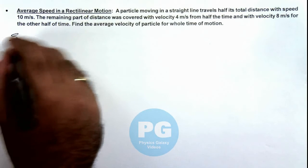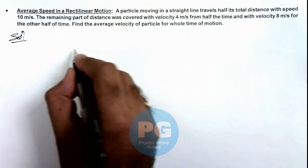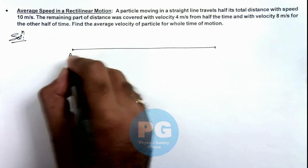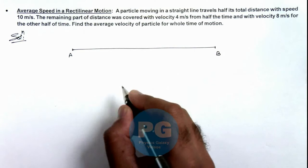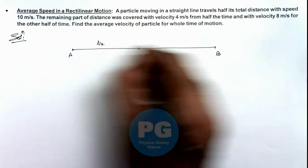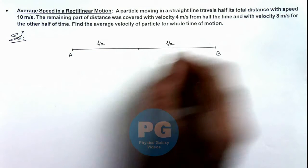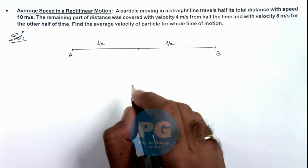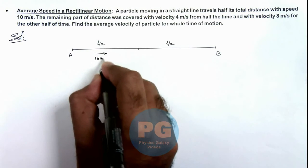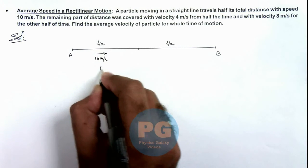In this situation, if we describe the motion on a straight line, say the particle moves from point A to B. Then, if the total distance is L, we divide the distance in two halves, L by 2 and L by 2. For the first half, we are given that it travels at a speed of 10 meters per second, and say it takes a time t1.